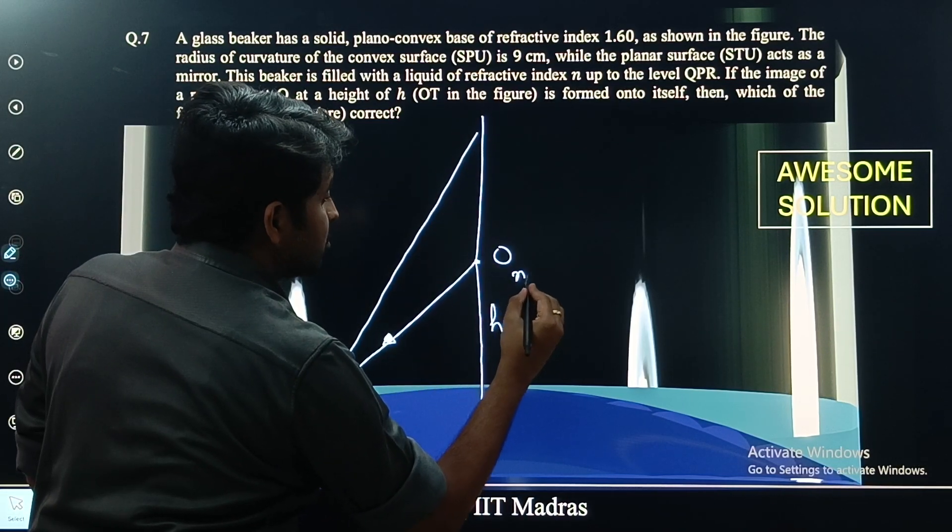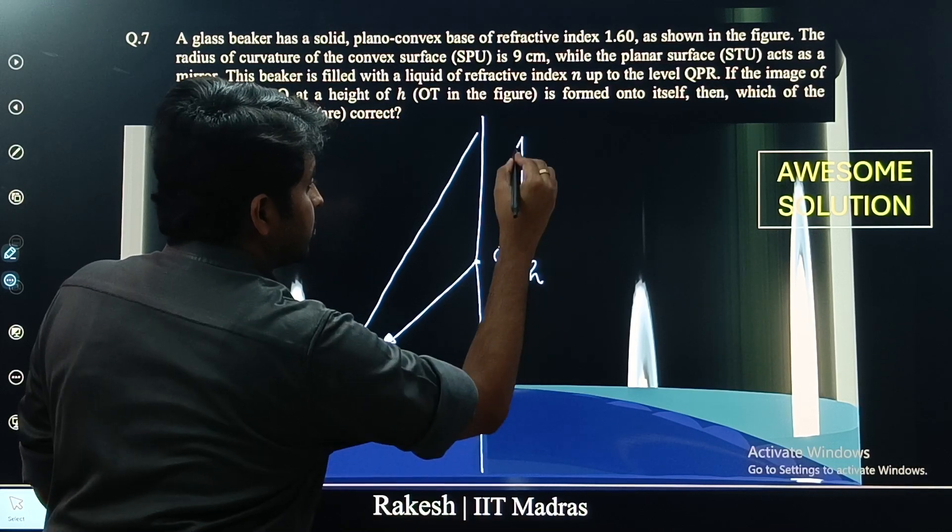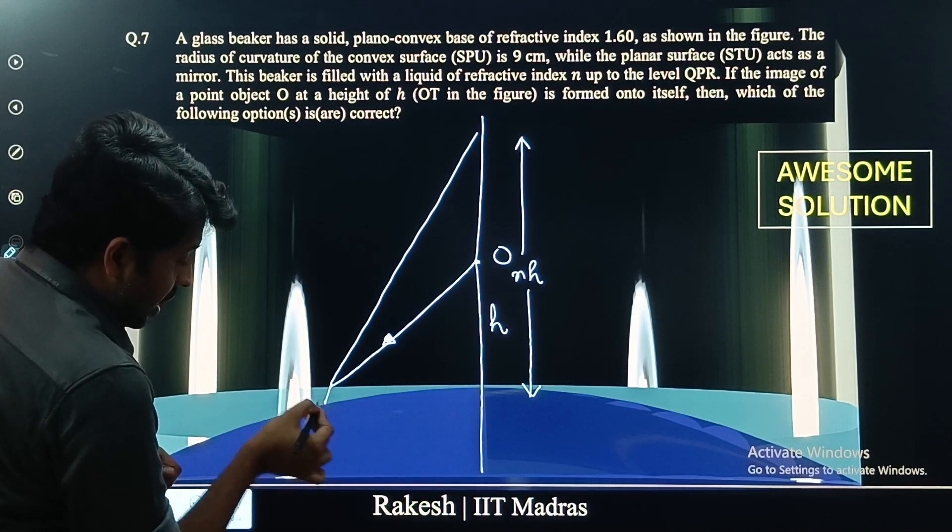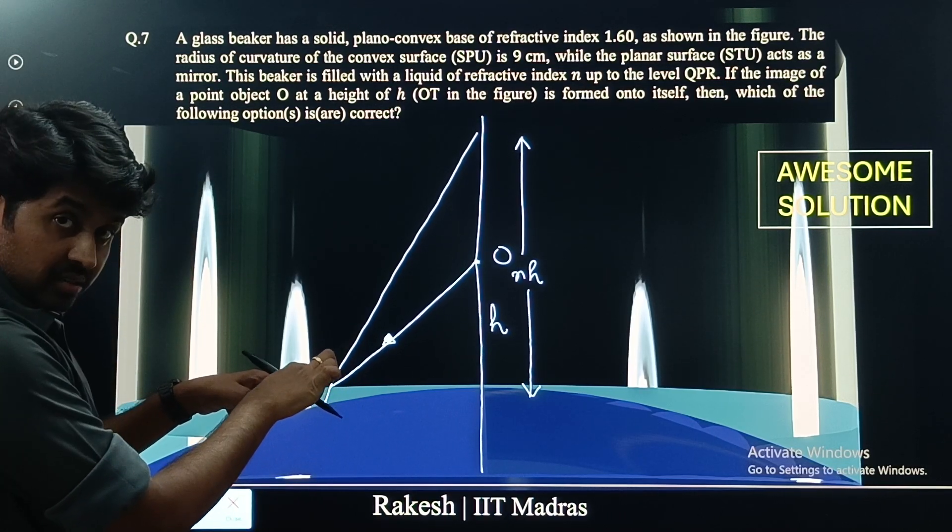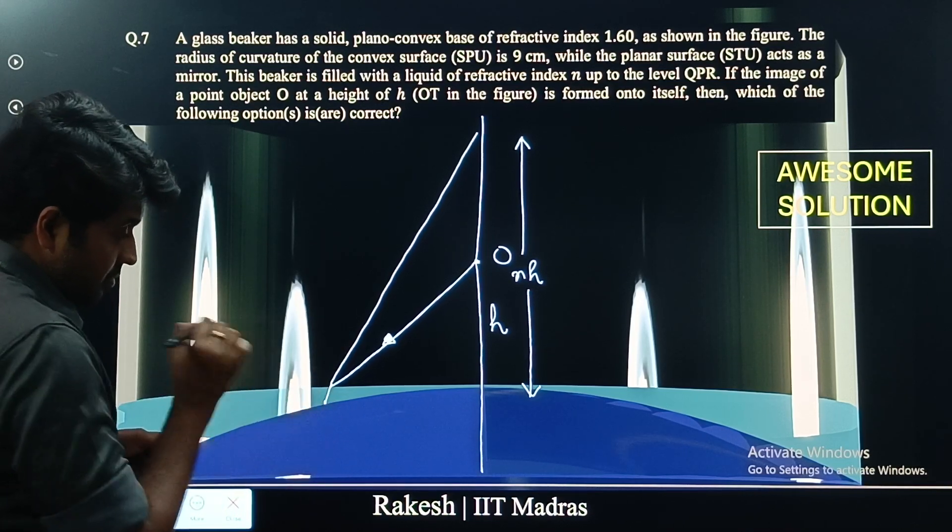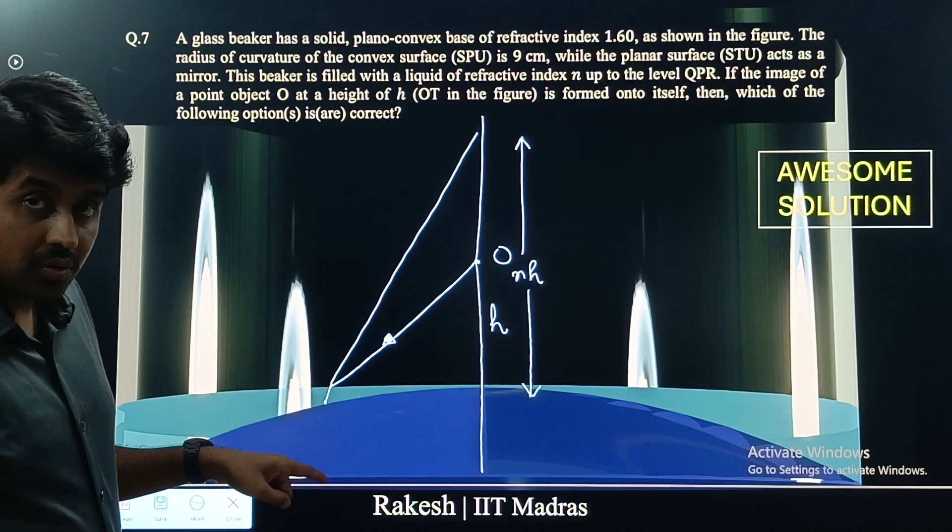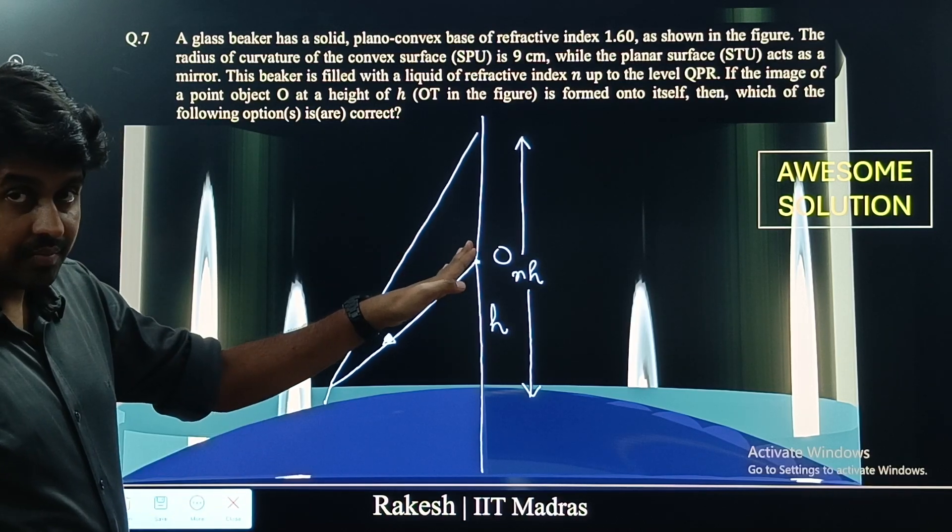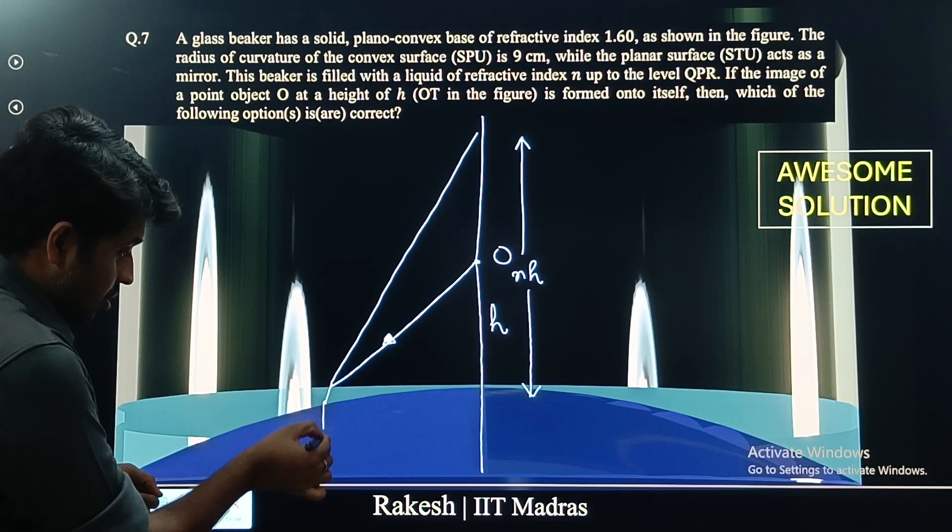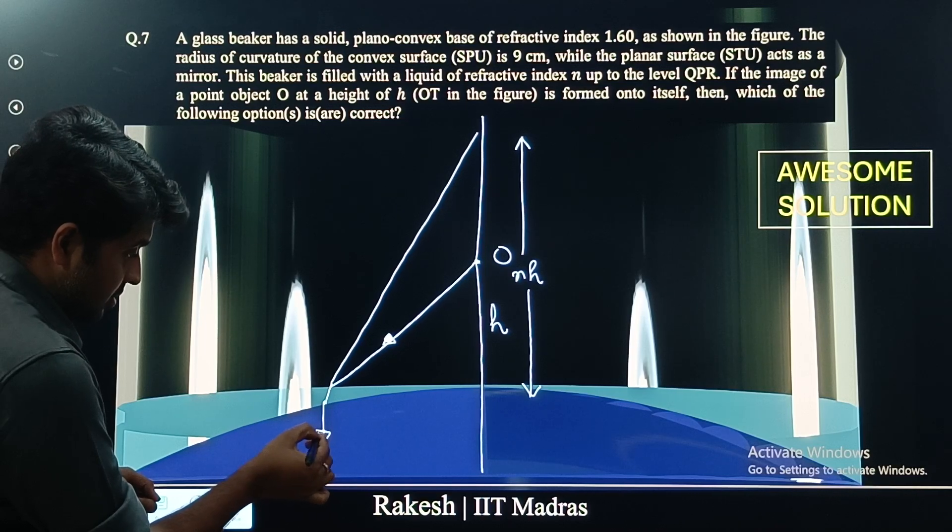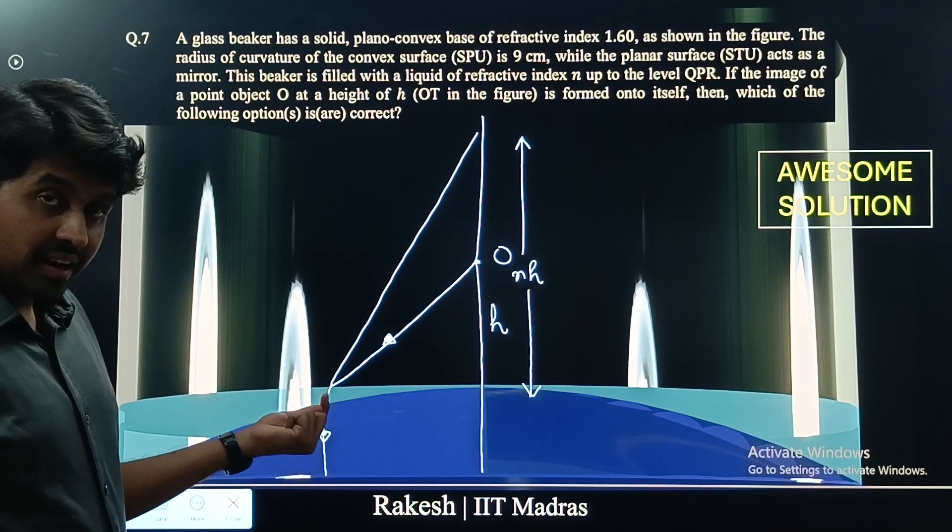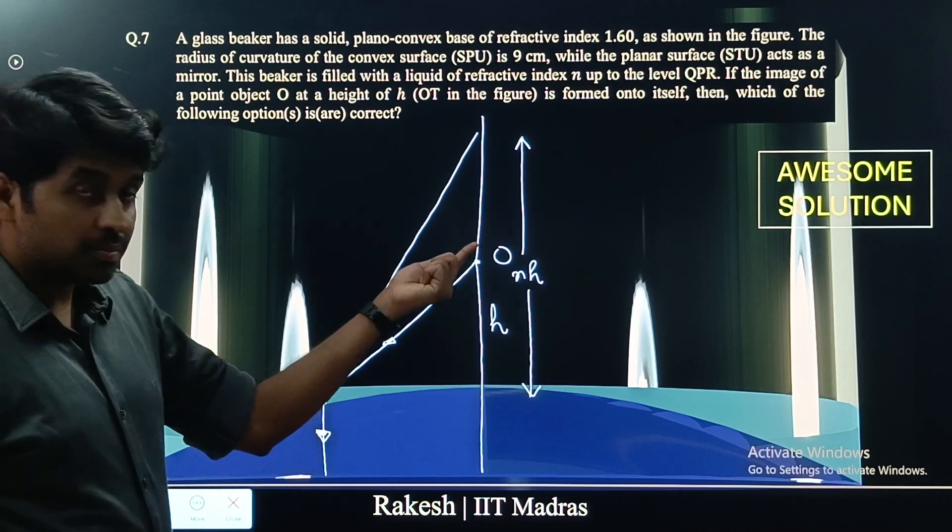This ray will meet at n times h. First interface refraction is over. At the second interface, after refraction, how should the ray go so that the image is formed on itself? Basically, the ray has to retrace its path. If this ray goes exactly like this and falls perpendicularly on the plane mirror, then it will reflect and retrace its path.